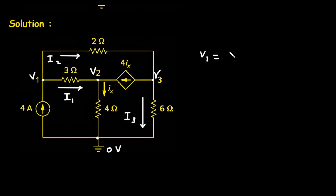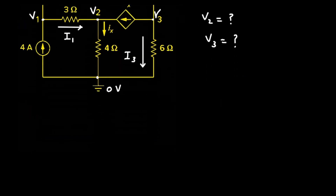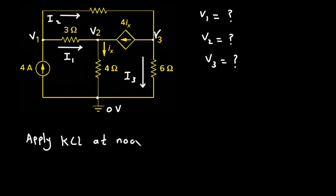Now we have to find the value of voltage V1, voltage V2, and voltage V3 — these node voltages. So first of all we will take node V1 and apply KCL.